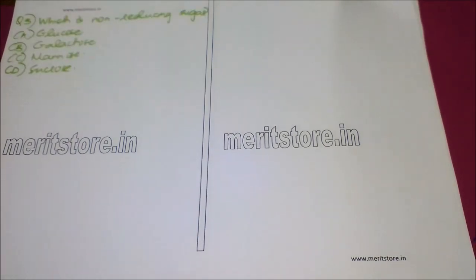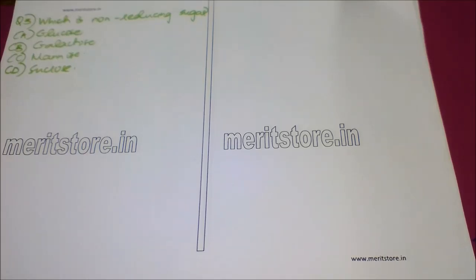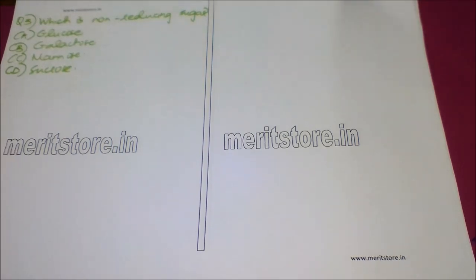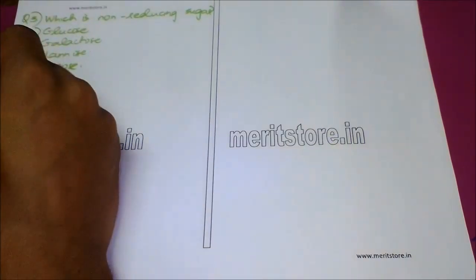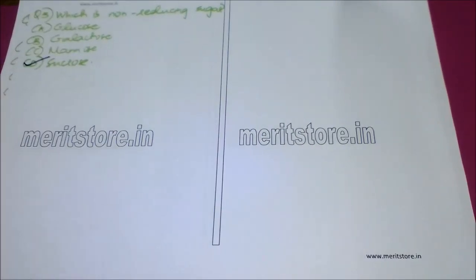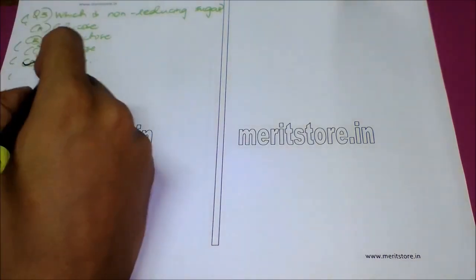Our next question is: which is a non-reducing sugar? Option A: glucose, Option B: galactose, Option C: mannose, and Option D: sucrose. The answer is Option D: sucrose. Carbohydrates in which the free aldehyde or ketonic group is absent cannot reduce the above reagents and are called non-reducing sugars, and sucrose is one such sugar.